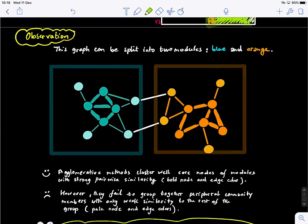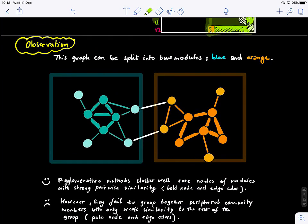However, we notice that for this example, if we see this graph, we have two modules. We have the blue one and the orange one, and they are connected by these two edges.